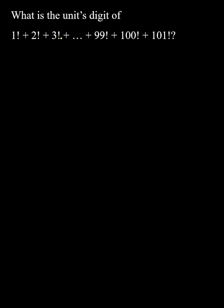This question asks: what is the unit's digit of 1! + 2! + 3! + ... + 101!? The key point for solving this is that 5! = 120, so the unit's digit is 0, and 6! = 720, also with unit's digit 0.